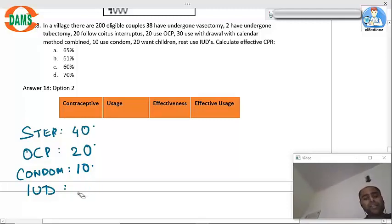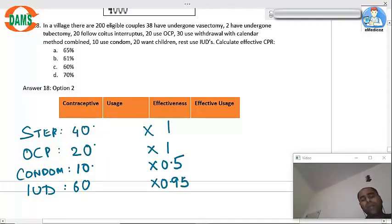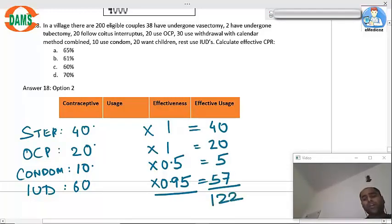Now effectiveness for sterilization, it is 100 percent. For OCP, it is 100 percent. For condom, it is 50 percent. For IUD, it is 95 percent. Now these values are given by the government of India. So 40, 20, 5, 57. So the total is 122 divided by 200. This will come as 61 percent.